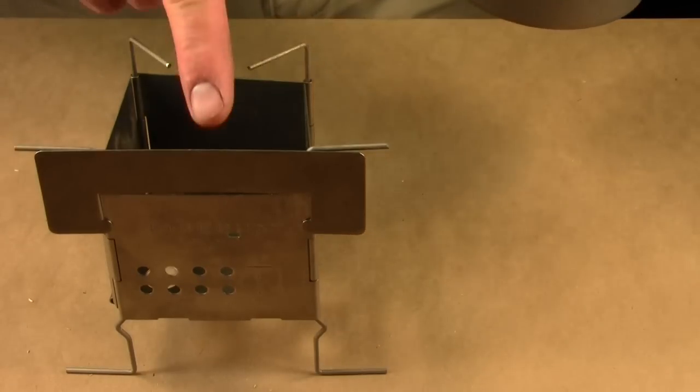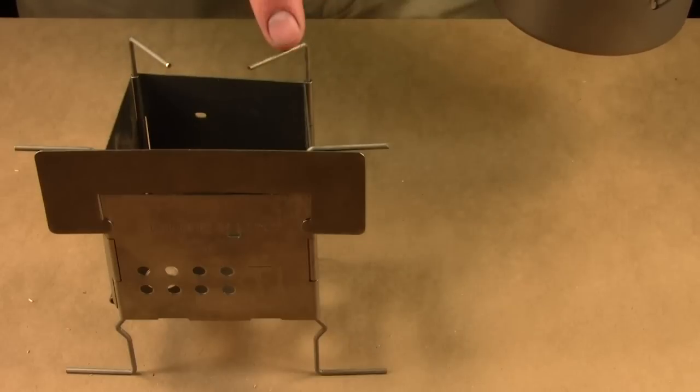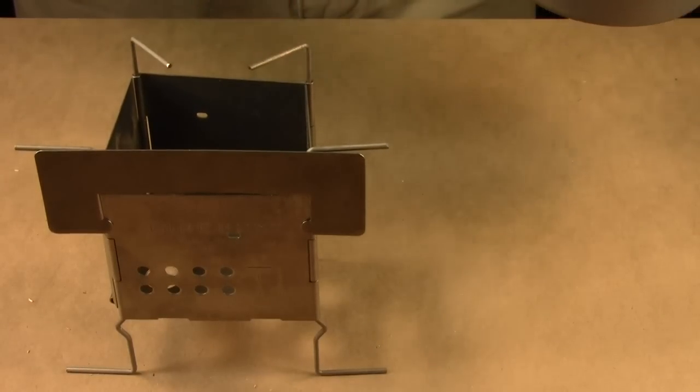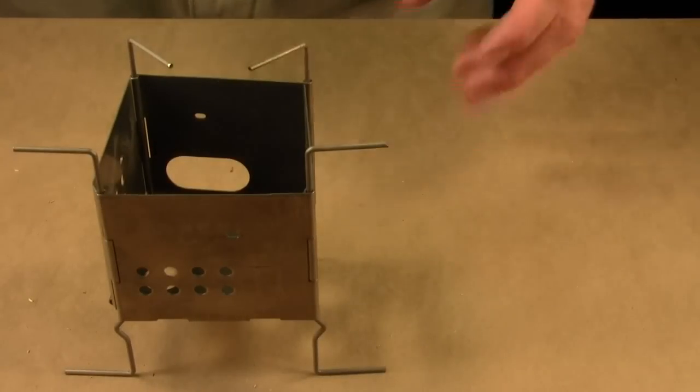So I just overlap the pot just a little bit on this side, and this edge of the flame guard actually becomes your pot support. So then you're supported here on the flame guard, and then back here on these other two arms of the pot support.